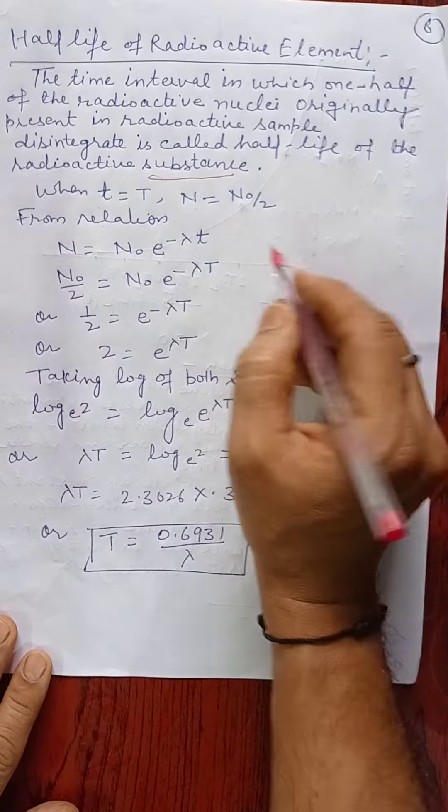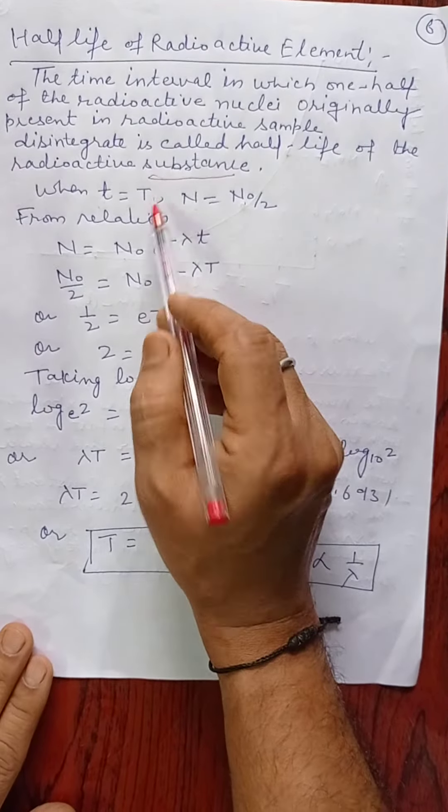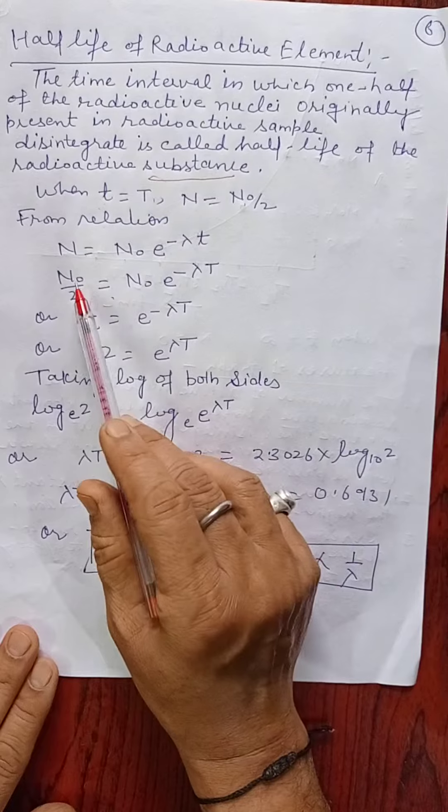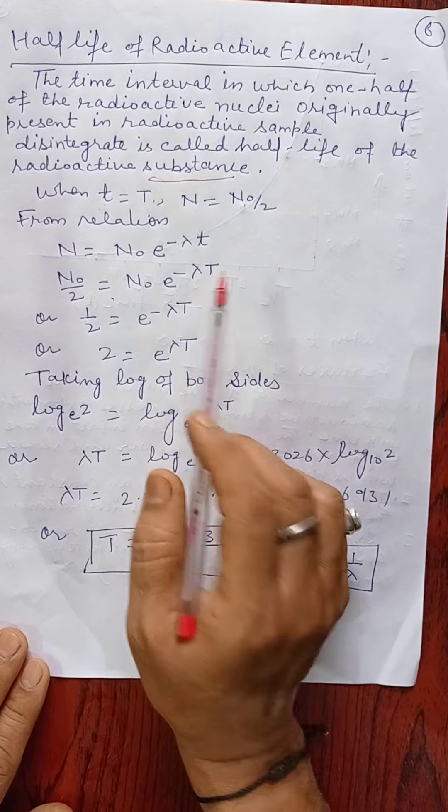Now we can put the value of N. N can be taken as N₀ by 2, and small t equals capital T. Putting these values here, we get N₀ by 2 equals N₀ e raised to the power minus λT.